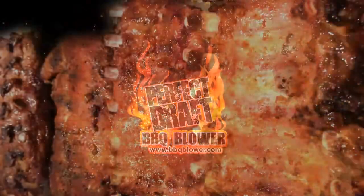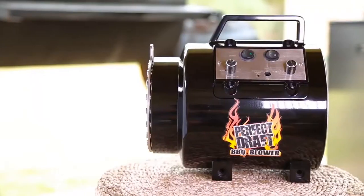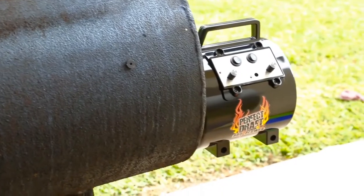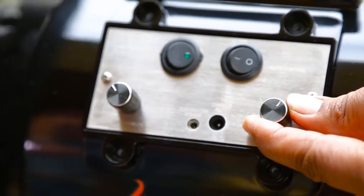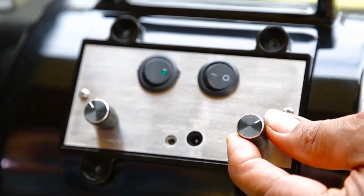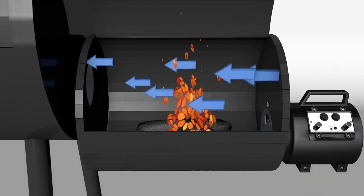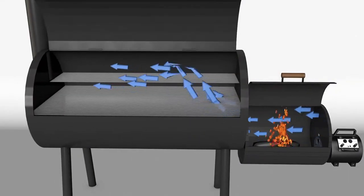The Perfect Draft barbecue blower turns your everyday backyard barbecue smoker into a convection-style cooking machine. It controls the airflow and regulates your temperature in your smoker, creating a consistent flow of heated air throughout your barbecue smoker.